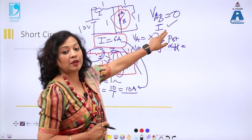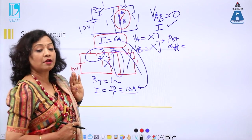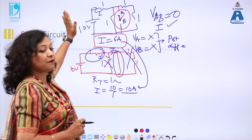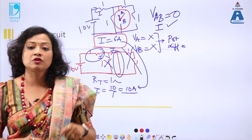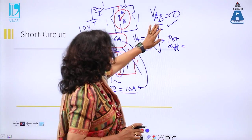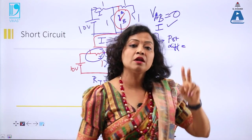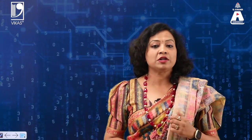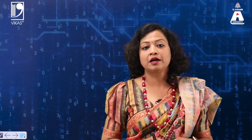So there will be current in a short circuit, but no voltage across the shorted terminals. To summarize: open circuit — no current, but there will be voltage. Short circuit — no voltage, but there will be current.